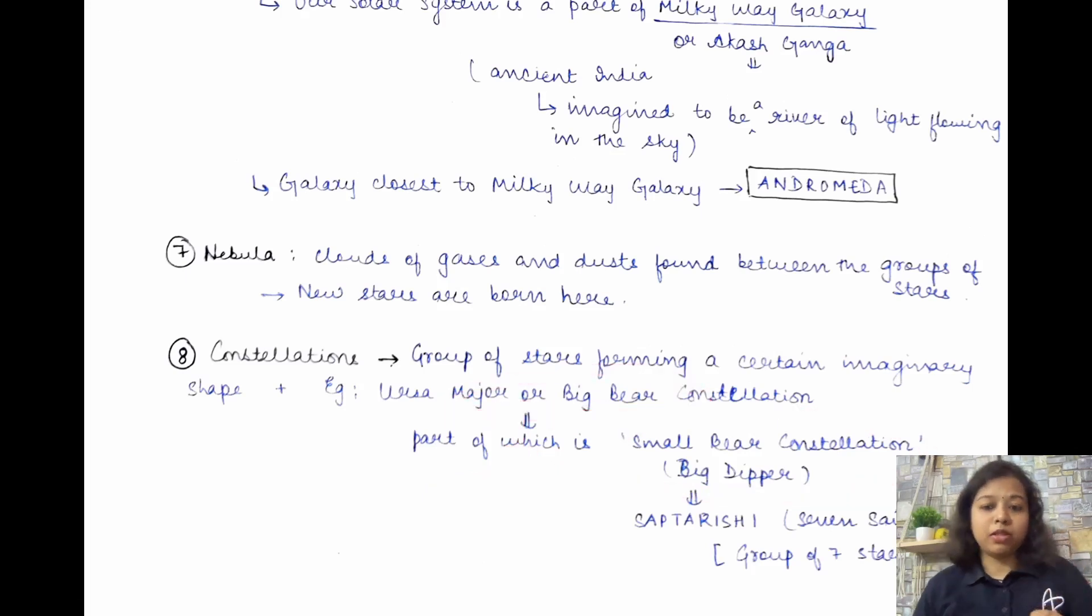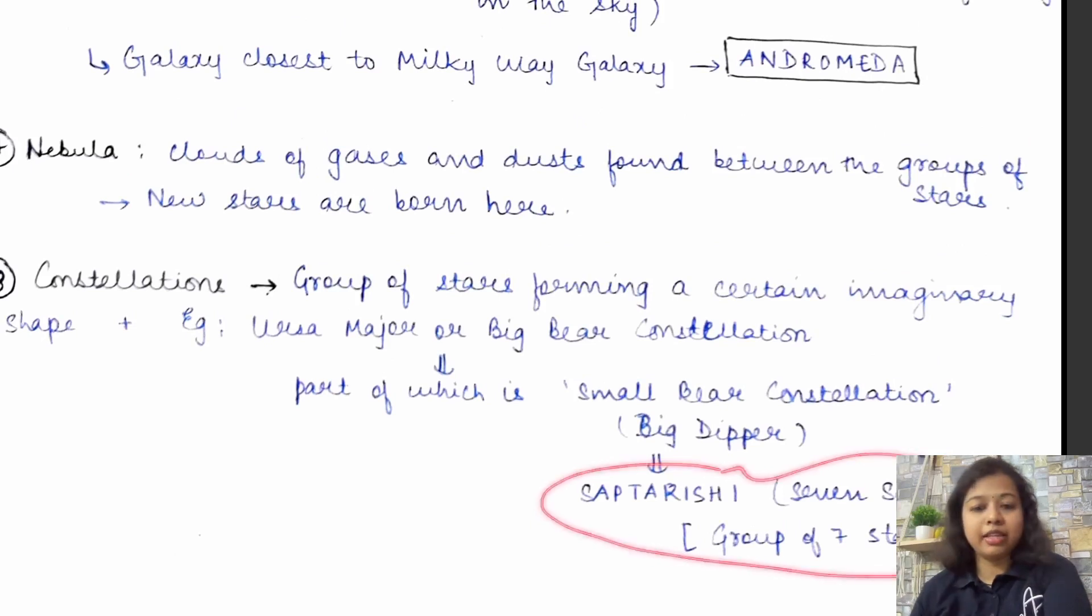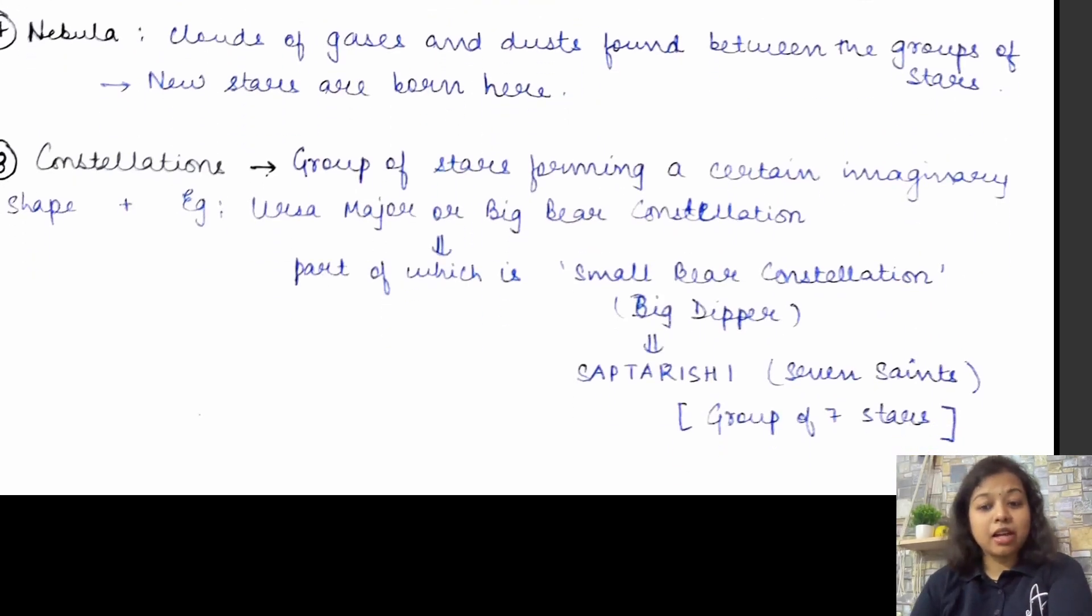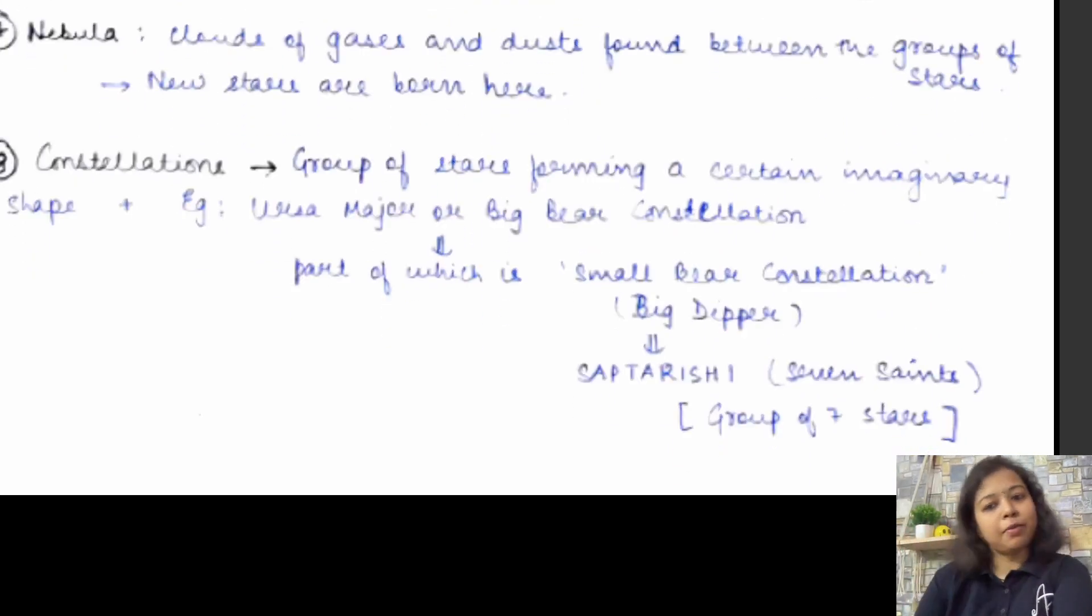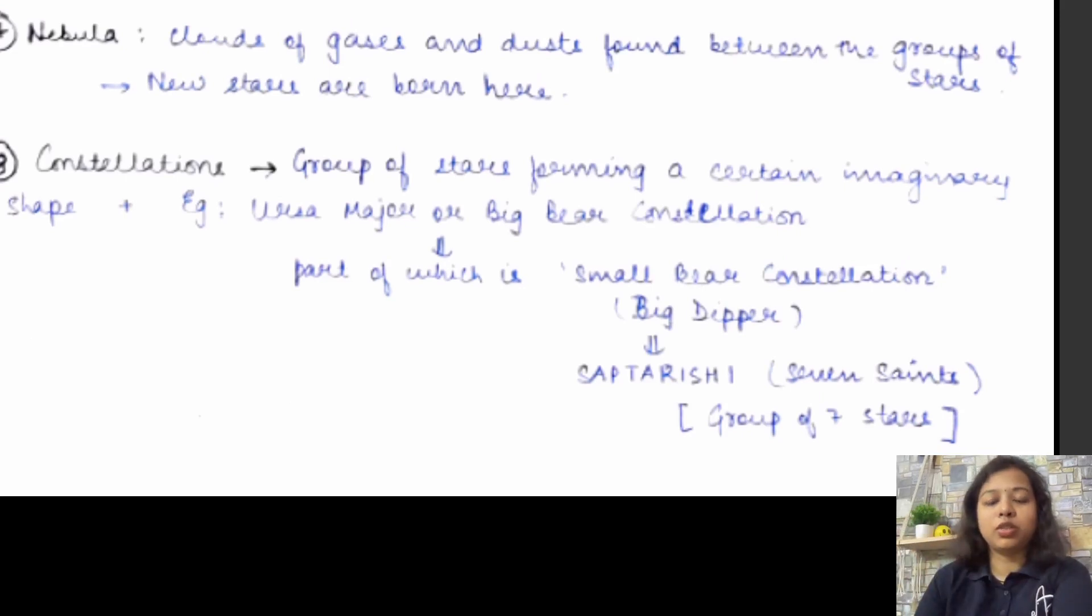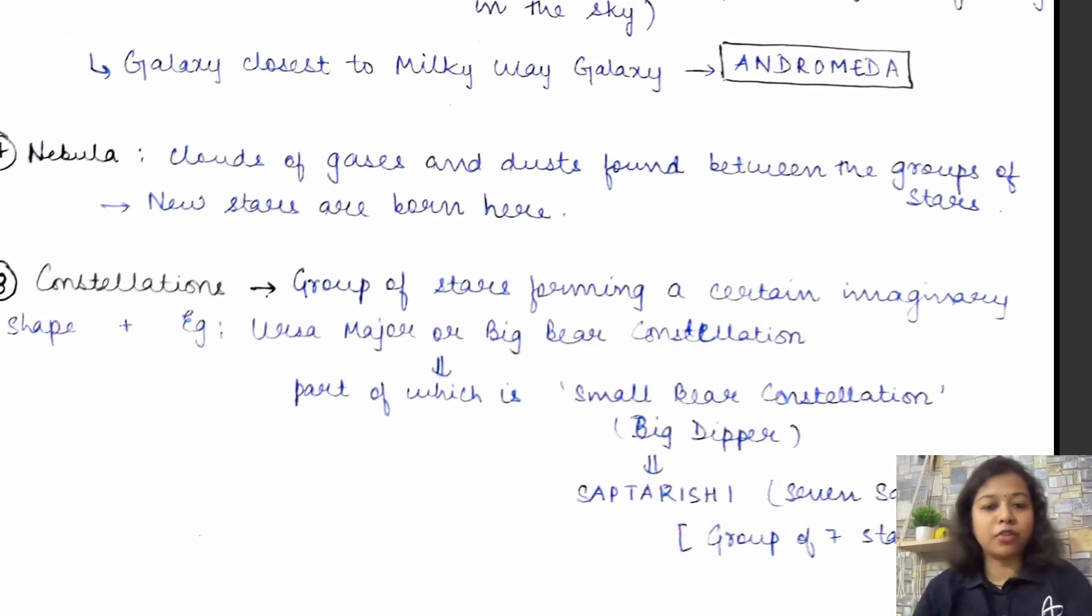Jis ko big dipper bhi bolta hai. Ab, yahan par, aapko samajh mein aayega isi constellation mein you will see this Saptarishi. Yeh seven saints. I will show you this again. Which is ye, aapne hamesha bahut sare logon hain, I hope, suna hoga. A group of seven stars. Aasman mein aapko saat taare dikhte hain. Aapko bhi aasman mein dekhiye when there is the sky is clear. You would notice the seven stars. I will show you how they are arranged and how do they look like. That is called a Saptarishi. That is, hindi mein mein unko seven saints ki tarah samajhte hain. Group of seven stars. So that is a part of the Small Bear constellation.